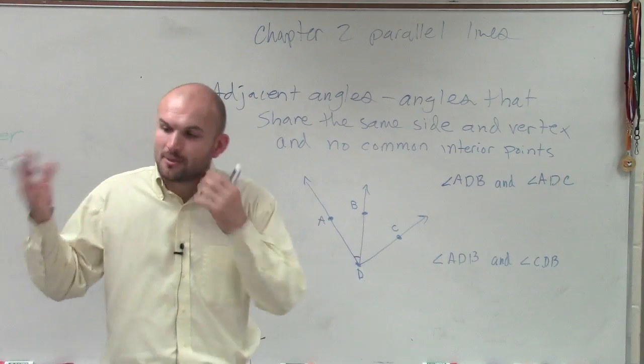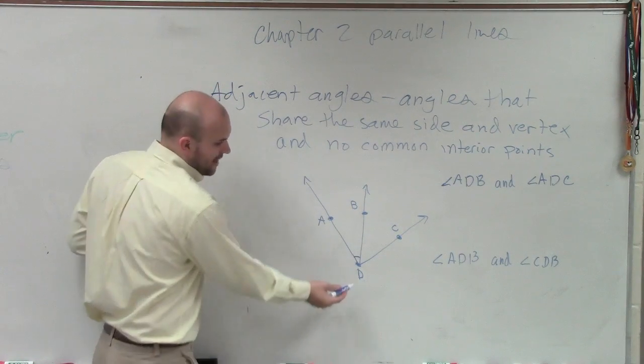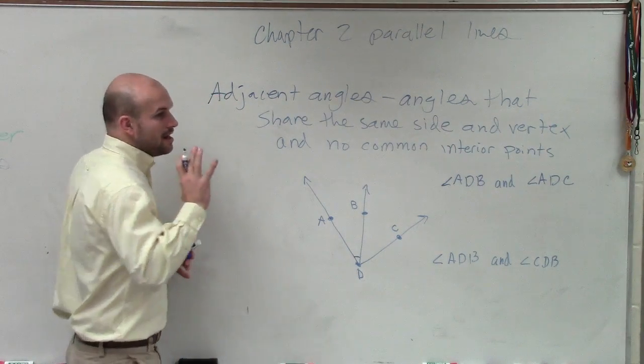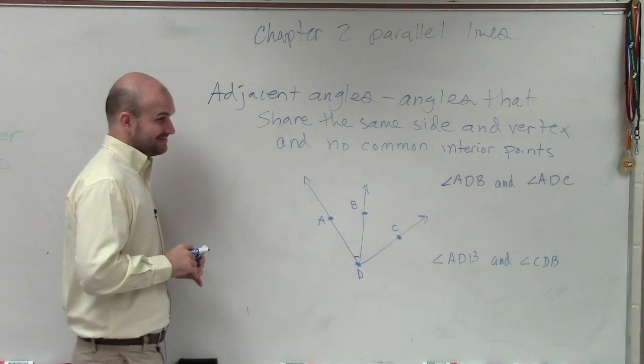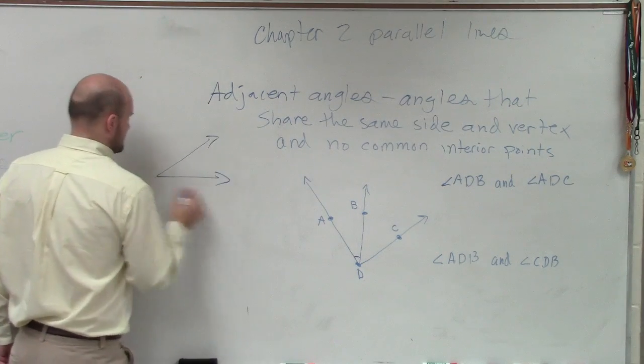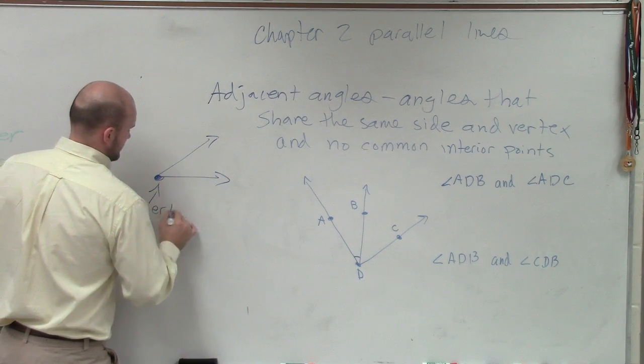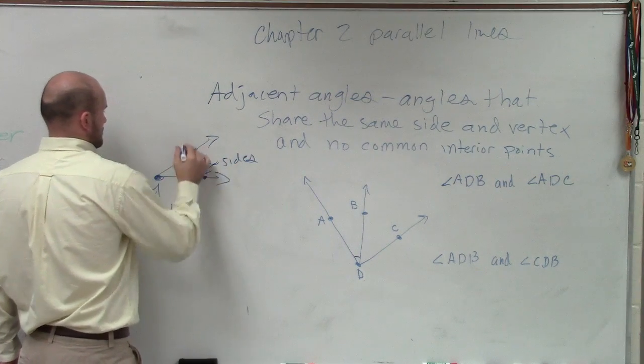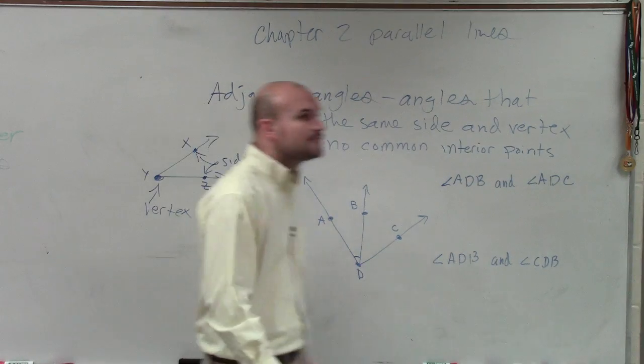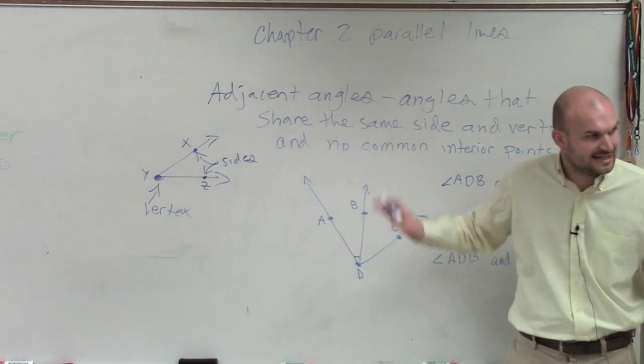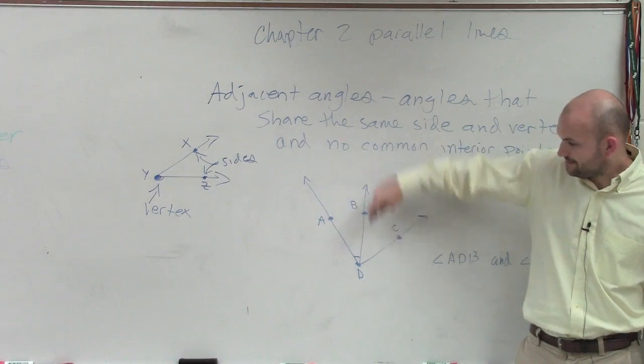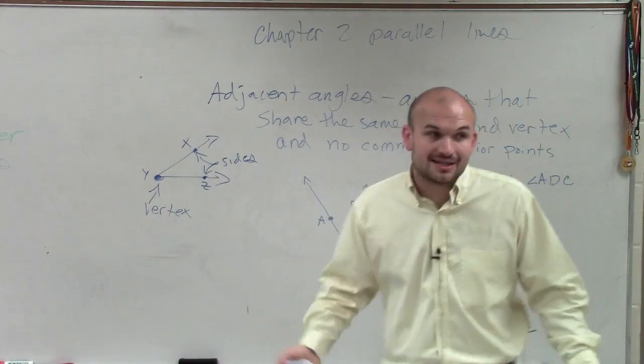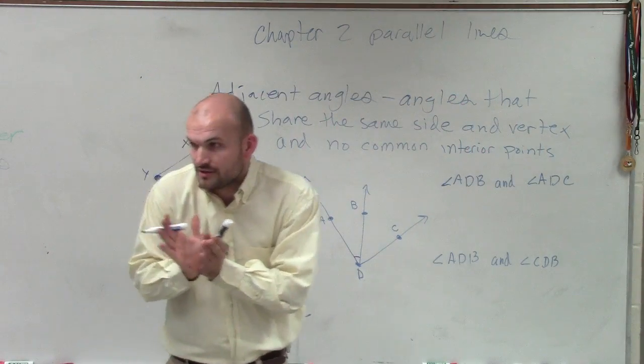Now, notice on angle ADB, there's a couple characteristics I want to remind you guys of. So first of all, angle ADB has a vertex of what, Guillermo? What is the vertex of ADB? Let's go back to it. An angle contains a vertex and then two sides. So Guillermo, what is the vertex of ADB? What is the vertex of that angle? D. Which one? D. Exactly, right? The vertex is where the two rays come together.